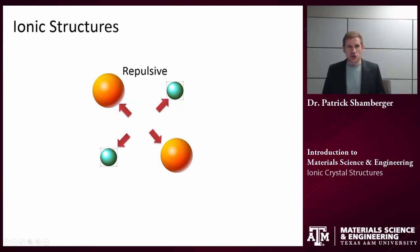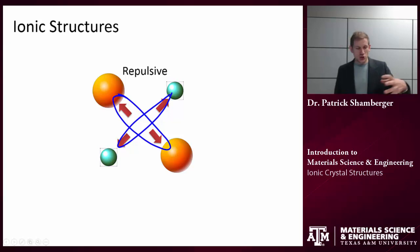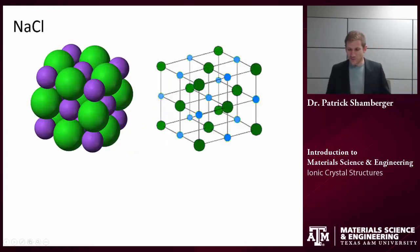There's an attractive force between oppositely charged particles, but there's a repulsive force between similarly charged particles. Two anions don't want to get too close together. There's a repulsive force between them pushing them apart. Ionic structures assemble in such a way to maximize those attractive forces and to minimize the repulsive forces.